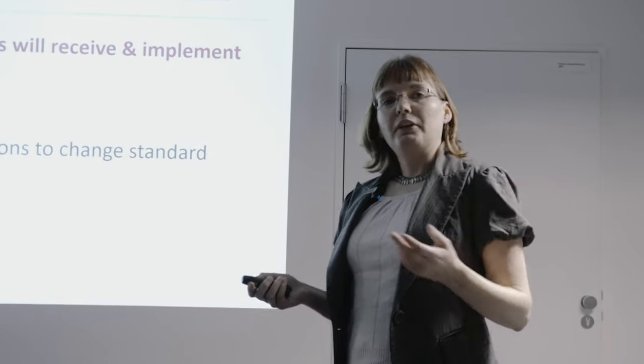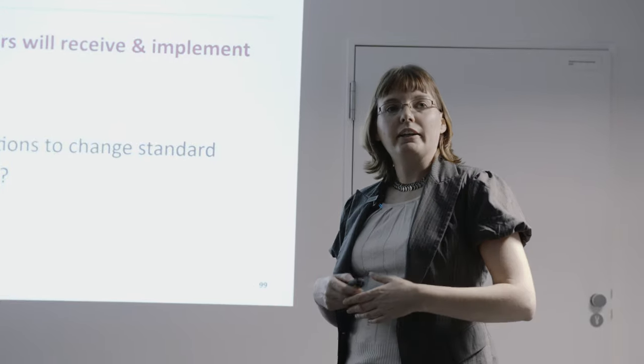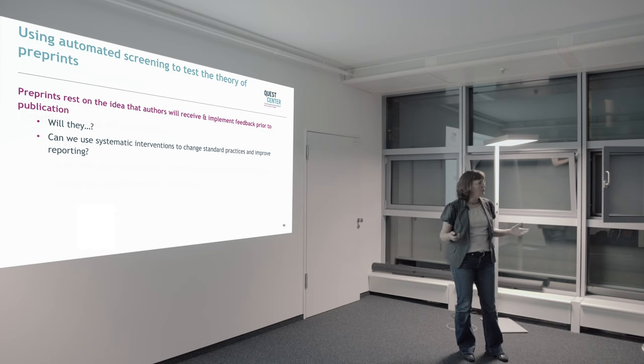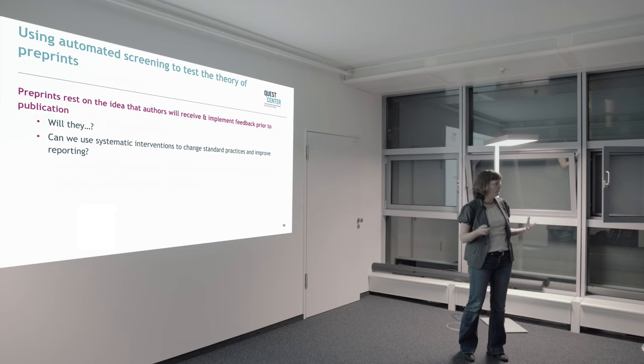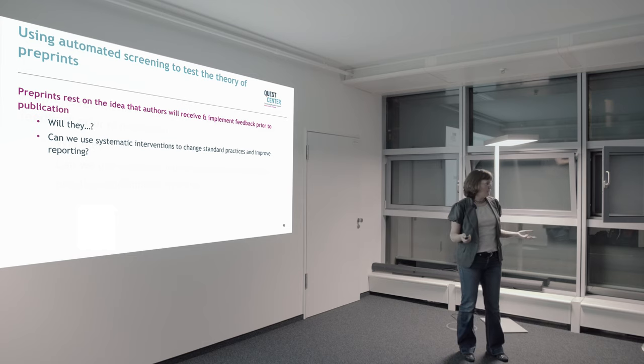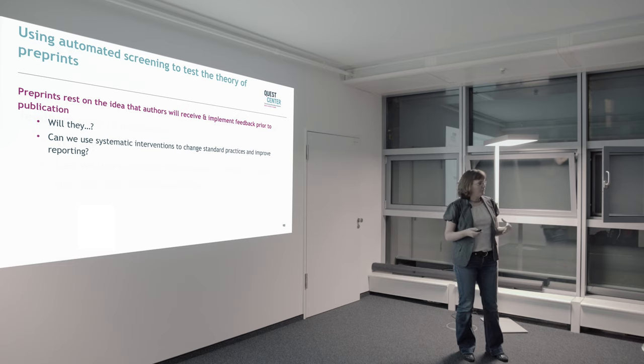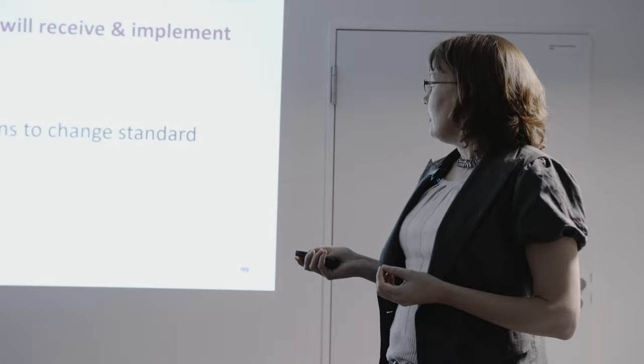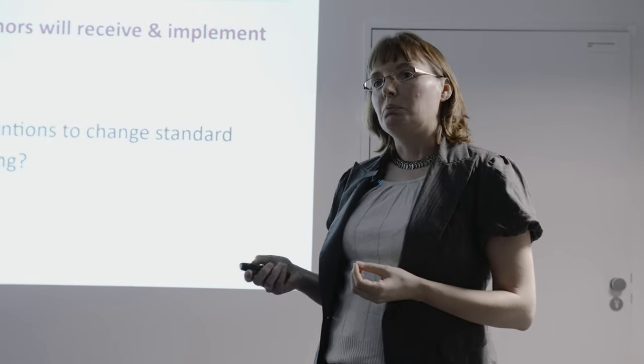And we also don't know if we send them stuff on common and well-accepted problems or suboptimal practices with information on tools and resources for implementing solutions, will they use that information? Can we use this on a broad scale to make the literature better? And can we use systematic interventions to change standard practices and improve reporting?